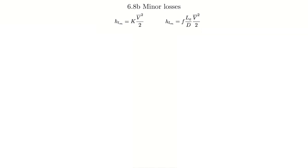That takes care of all the major losses. Now we're going to do the minor losses — things like fittings and practical imperfections in our piping network. Minor losses can be calculated using the expression h_L sub M equals K times V squared over 2, where K is a coefficient tabulated based on the specific fitting. There's also an equivalent length approach — instead of a K coefficient, you express the fitting as an equivalent additional length of pipe, then use the pipe friction factor with that length.